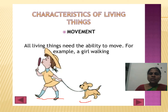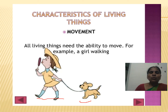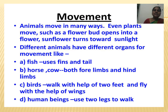The girl is a living thing because she is moving — it shows movement. Even the dog also shows movement. These two are living things. Animals move in many ways. Even plants move, such as flowers that open, and sunflower turns towards sunlight.